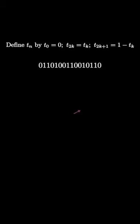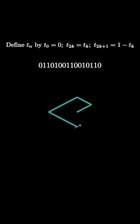Here's a recursively defined binary sequence called the 2A Morse Sequence. Start with a cursor, and every time you see a 0, move one unit forward, and every time you see a 1, rotate 60 degrees. You'll draw a shape that starts like this.